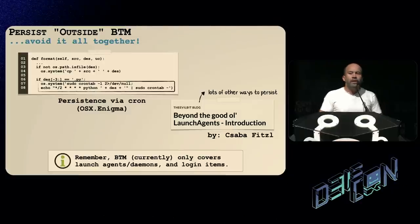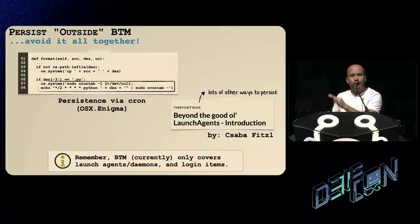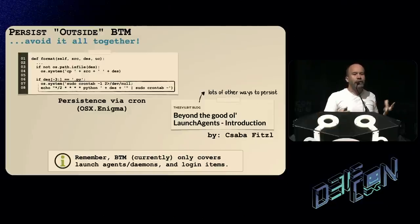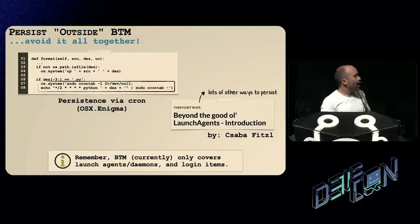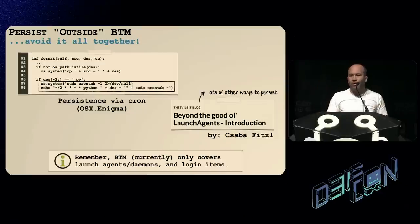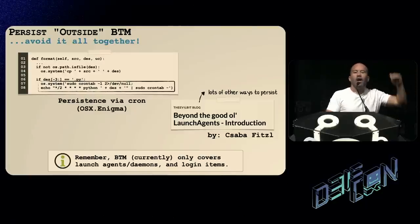One option — not really a bypass per se, more a limitation of BTM — is to simply persist in a way that is outside launch daemons, launch agents, or login items, which are the three persistence mechanisms BTM currently monitors. For example, you can persist as a cron job and BTM does not currently monitor cron jobs. There's also a great blog post by Chaba showing 20 or so more esoteric and stealthy ways to persist. If you persist in any of those ways, as long as you're not a launch daemon, launch agent, or login item, BTM doesn't even come into play.